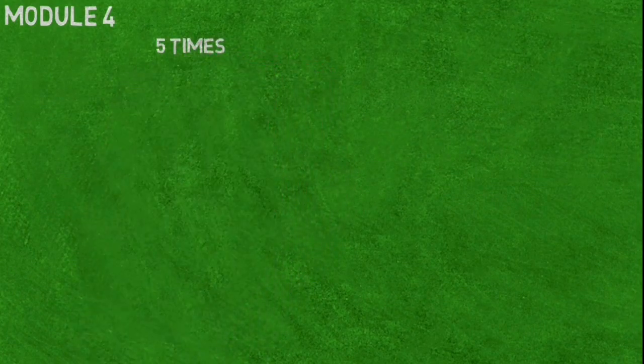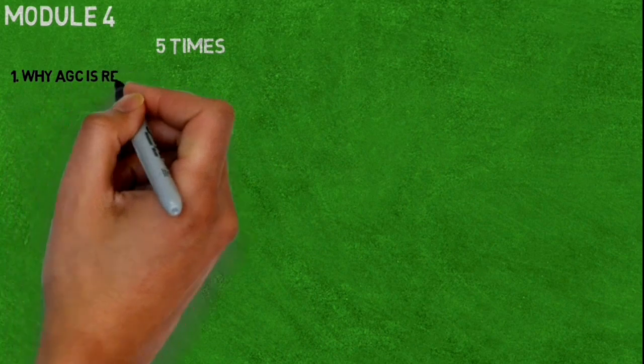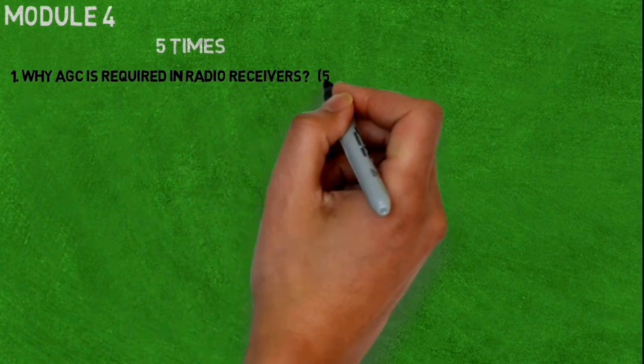Now let's see Module number four. Five times repeated question is: why AGC is required in radio receivers?